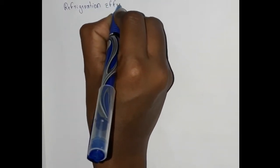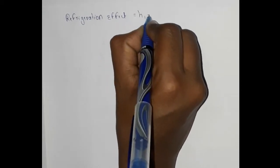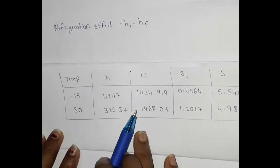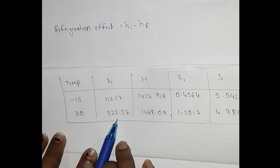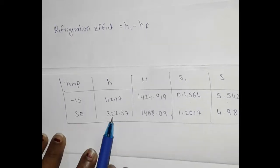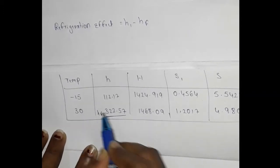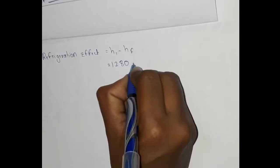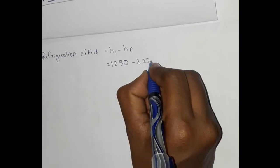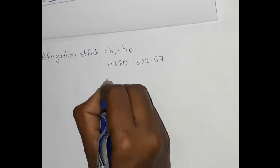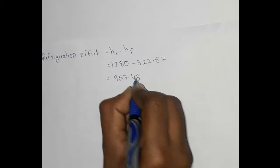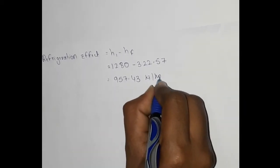The refrigeration effect formula is H1 minus Hf2. H1 is already found as 1280, and Hf at the second temperature (30°C) is 322.57. So refrigeration effect equals 1280 minus 322.57, which equals 957.43 kilojoules per kg.